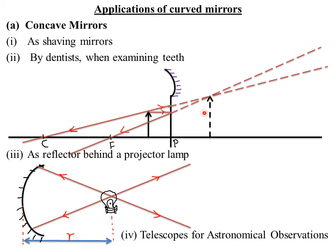As shaving mirrors, the person being shaved can see a well magnified image to clearly see the kind of cut that has been made. The advantage of concave mirrors as shaving mirrors is that the image produced is magnified. You may be asked to sketch a ray diagram to explain why concave mirrors are used as shaving mirrors or by dentists — you draw a concave mirror with the object between F and P, showing the image is magnified and erect.